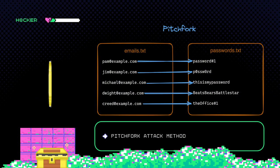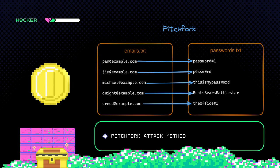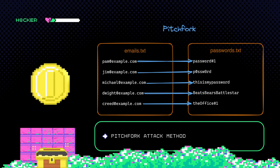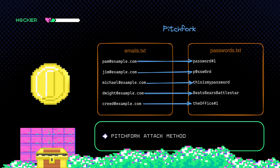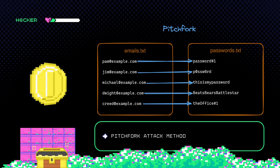So the combination of usernames and passwords used to test will look something like this. Both files must have the same number of lines, as each one will be combined with its corresponding partner in the other file.